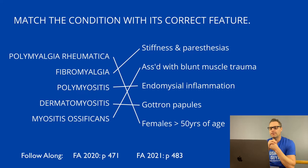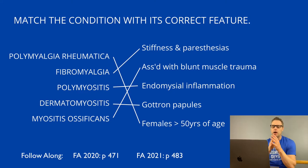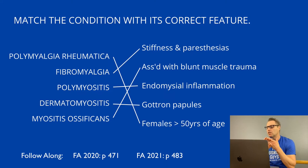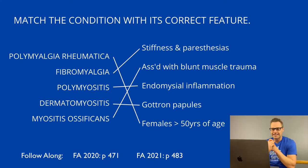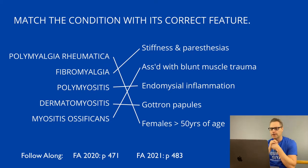The second condition is fibromyalgia, seen most commonly in females between 20 and 50 years of age. This is characterized by widespread musculoskeletal pain, stiffness, paresthesias, fatigue, and cognitive disturbances — known as fibro fog. This is best managed with regular exercise, the use of antidepressants, and if needed, pain medicine directed at the nerves, so a drug like gabapentin would be ideal.